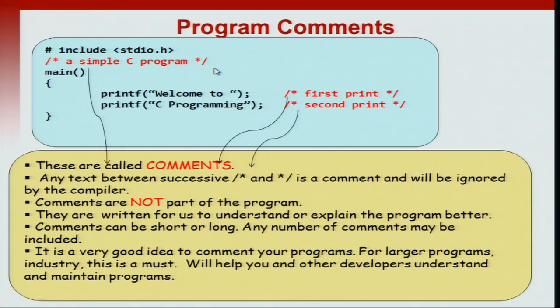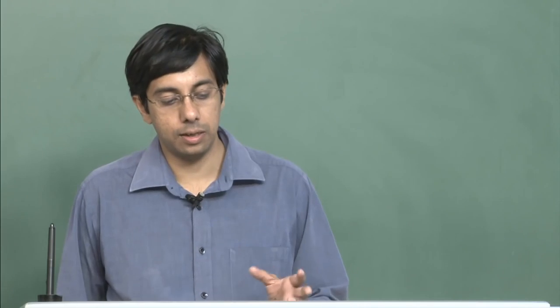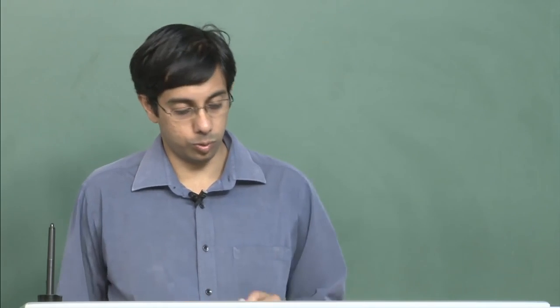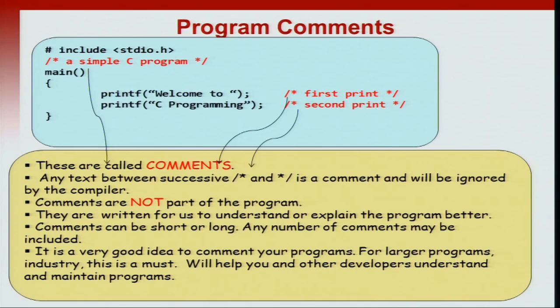Whatever is highlighted in red in the code is what are known as comments. Any text between forward slash star and then later followed by a star forward slash — any text between successive /* and */ — is a comment and it will be ignored by the compiler. As far as the compiler is concerned, a code with comments is the same as a code without comments. It does not affect the logic of the code, so comments are not part of the program. However, it is highly recommended that any program you write, you should comment the code.